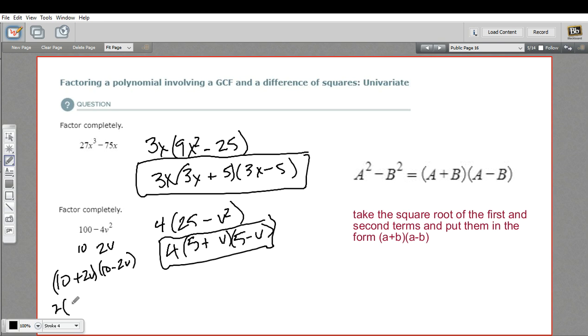So this is 2 times 5 plus V. And this is 2 times 5 minus V. And you'd multiply those twos together. You'd get 4 times 5 plus V times 5 minus V. And that's exactly what we got up here. So that is a little bit of work with factoring first before you use the difference of squares.